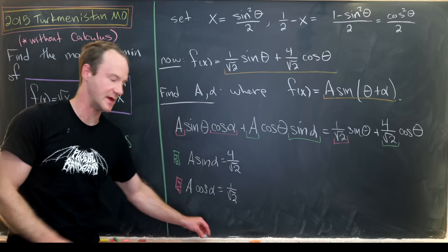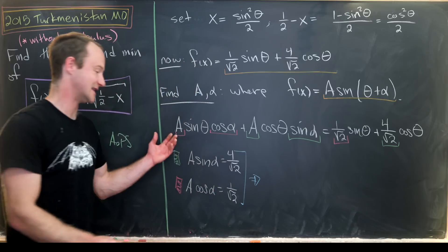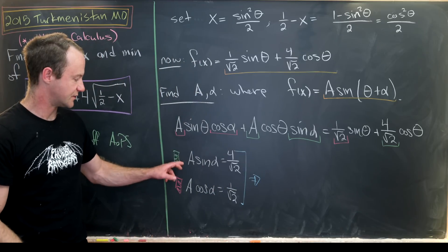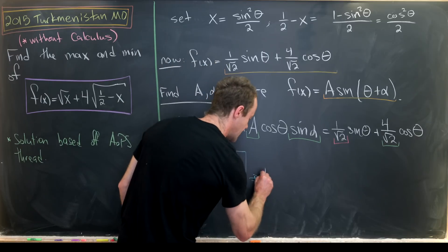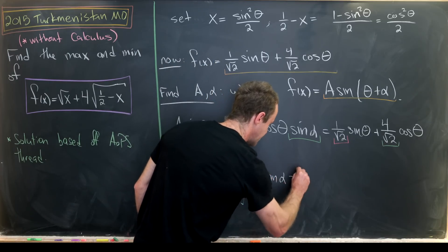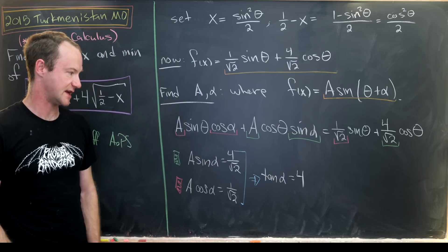But where can we go from there? Well, maybe we would take both of these equations and divide them. And so notice the a's will cancel and that'll leave us with sine over cosine or the tangent of alpha equals four. That's what happens if we divide the two right-hand sides.